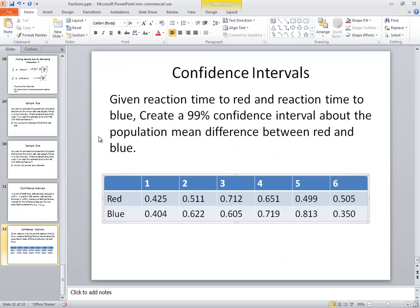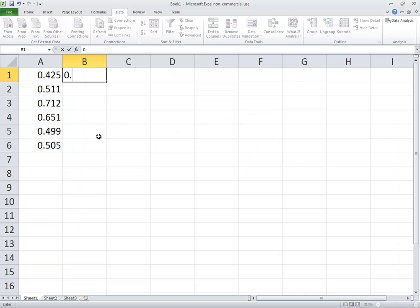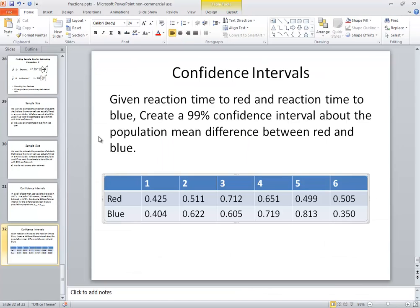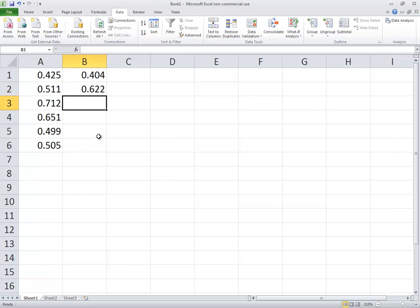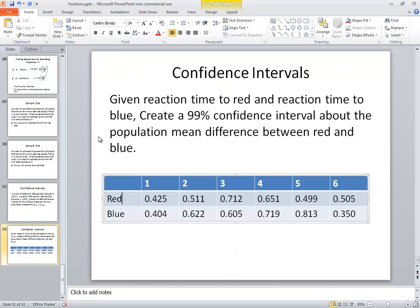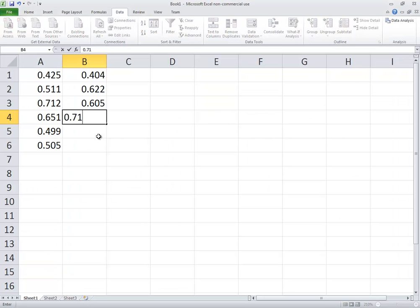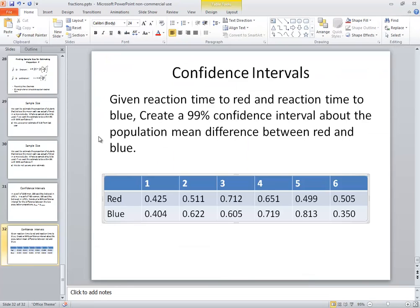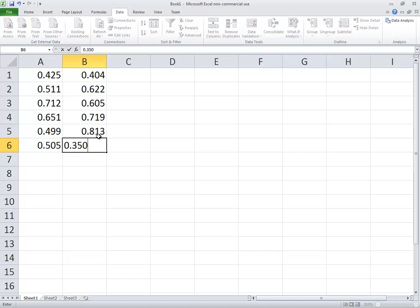Now I'm going to put my blue in my second column. So I got 0.404, 0.622, 0.605, 0.719, 0.813, and 0.350.